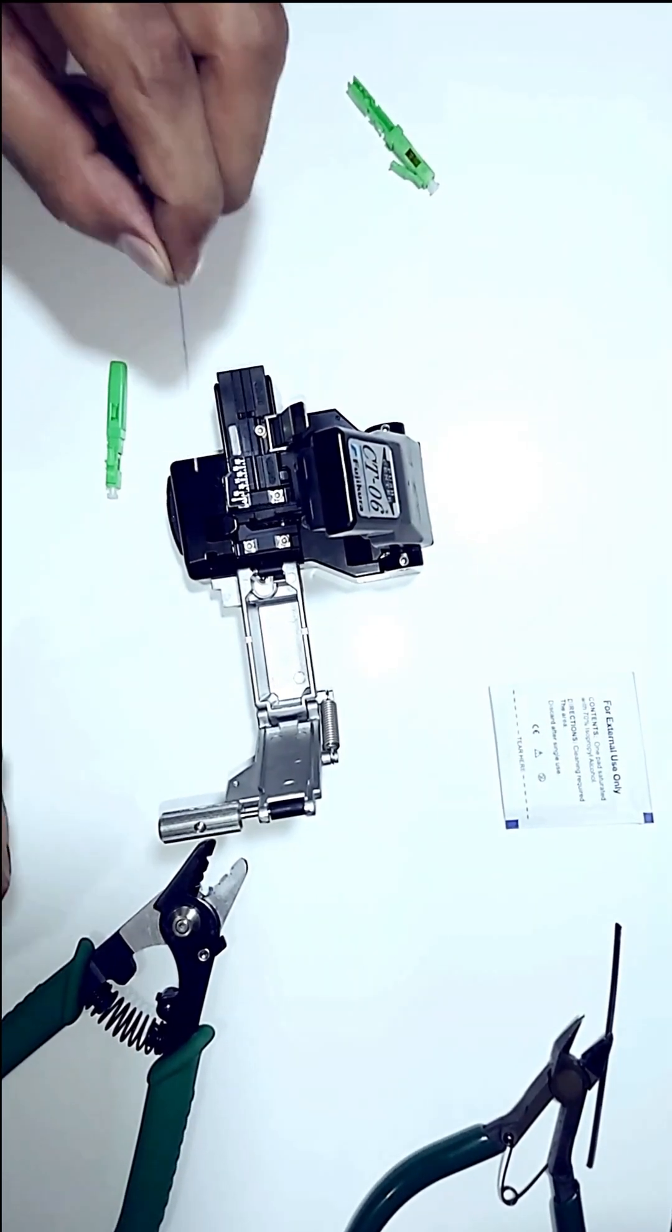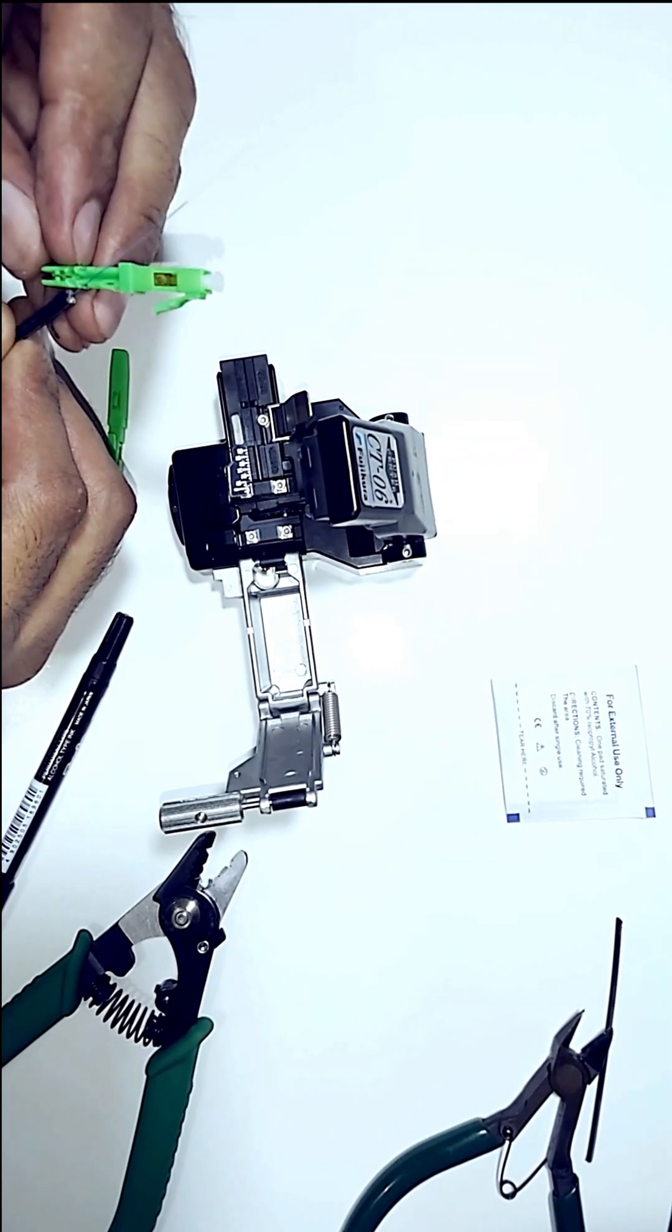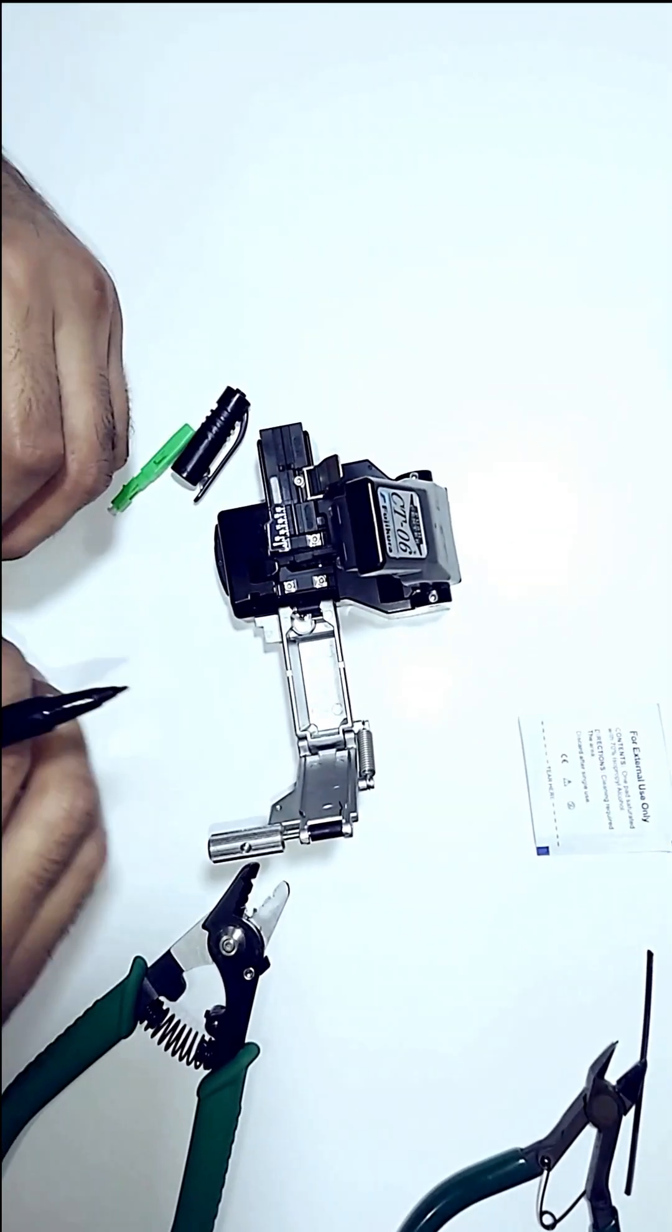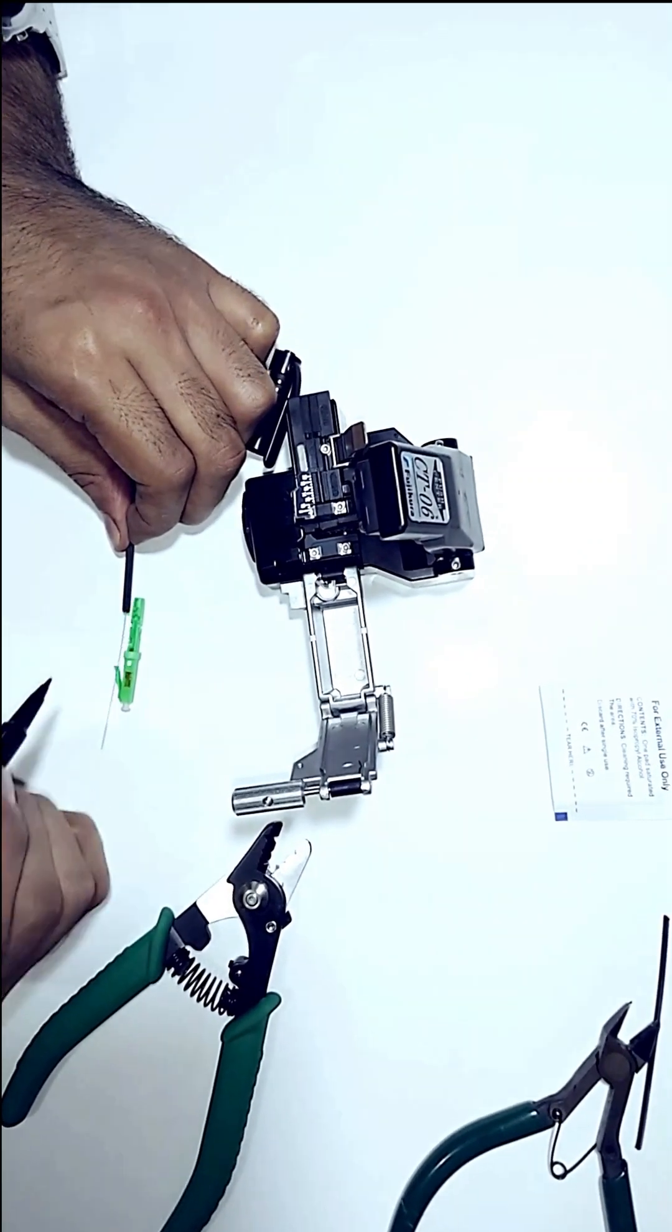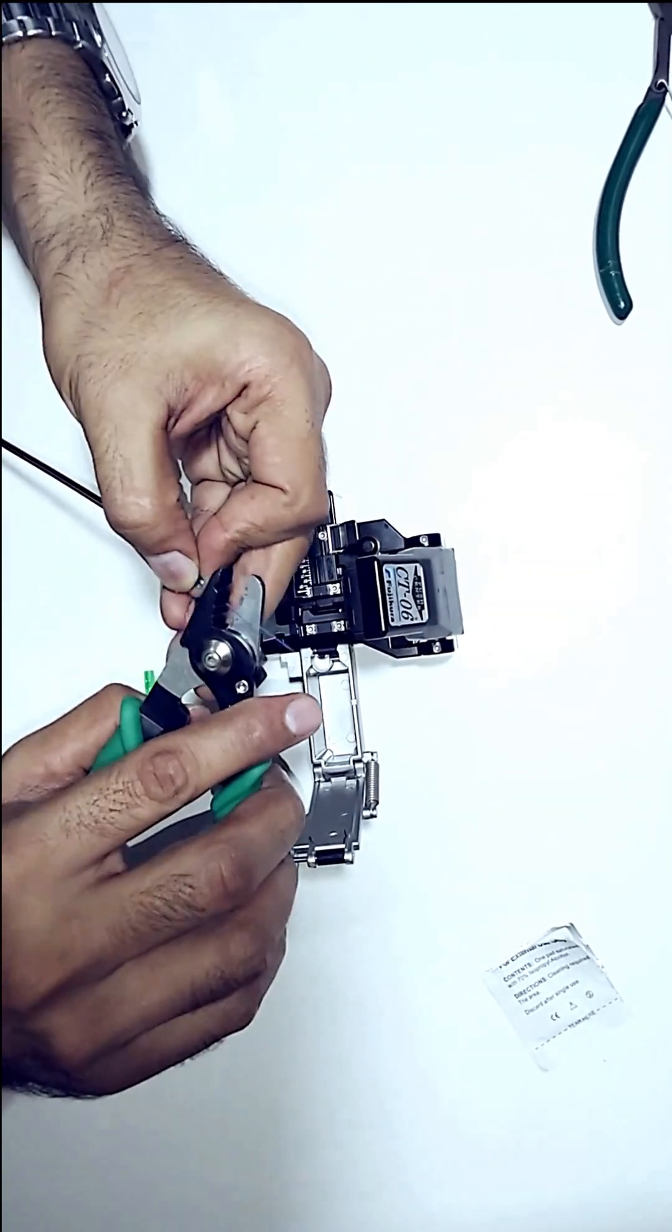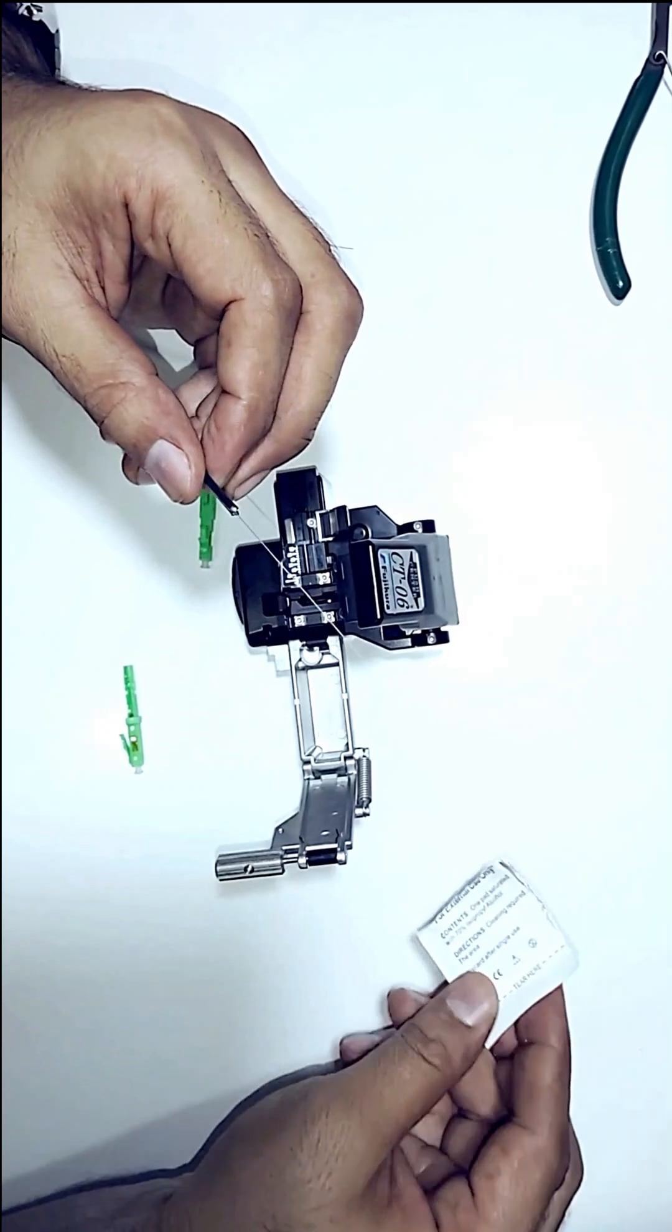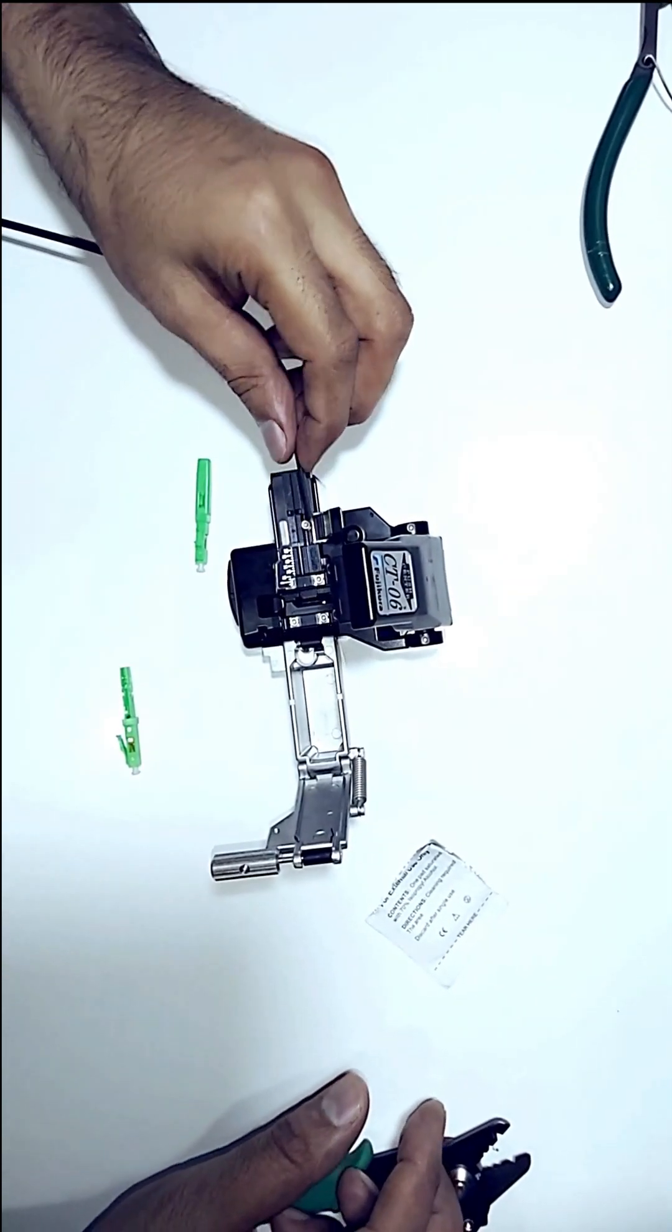After marking, place the fiber next to the cleaver blade and make another mark where the fiber needs to be cleaved. This measurement allows us to cleave just the right length. Now, subtract the length of the connector lock from the initial measurement. This step ensures the fiber sits securely inside the lock. This process only needs to be done once for the first end.